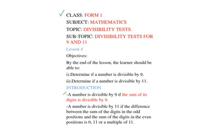A number is divisible by 9 if the sum of its digits is divisible by 9. A number is divisible by 11 if the difference between the sum of the digits in the odd positions and the sum of the digits in the even positions is 0, 11, or even a multiple of 11. So if we have a number, let's say A, B, C, D, E.